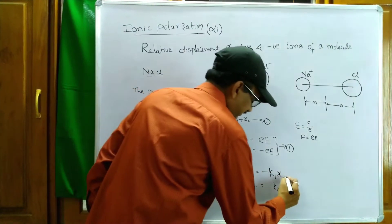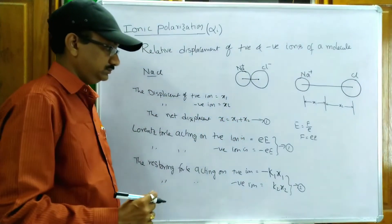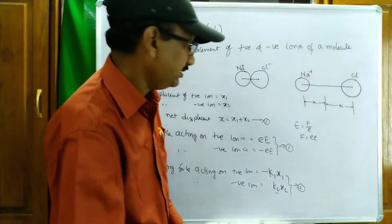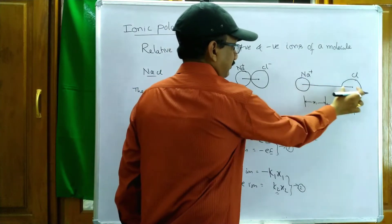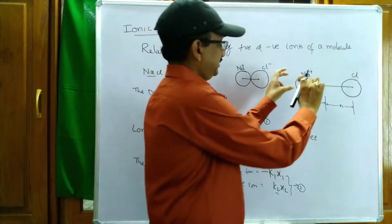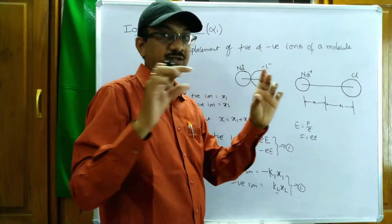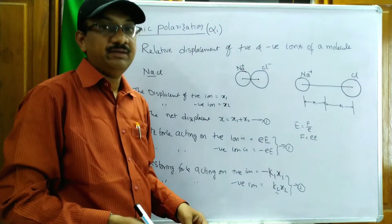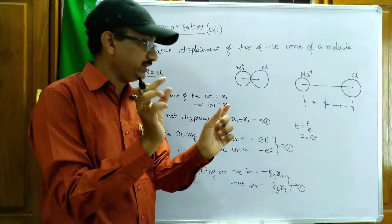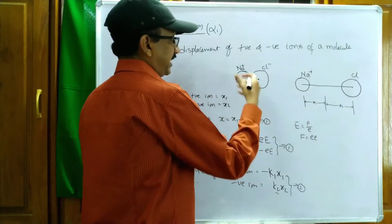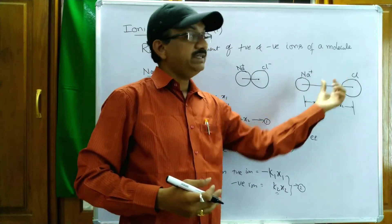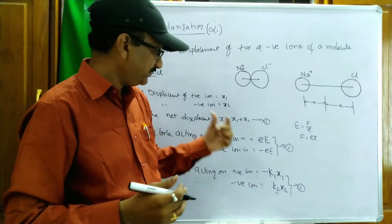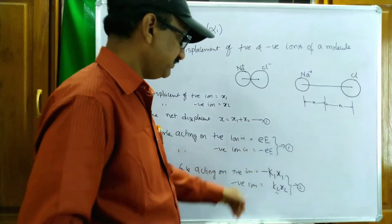If I put a spring between two boxes and stretch it, the spring undergoes simple harmonic motion. Even though there is no spring here, these two ions are oscillating — that is called the constant k. For NaCl the constant is different from HCl; this is a material constant. Now, adding equation 1 and equation 2.